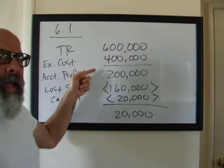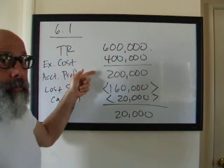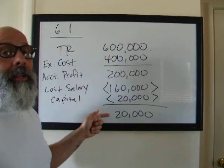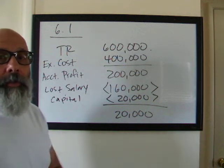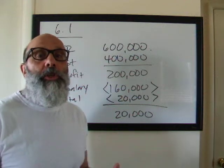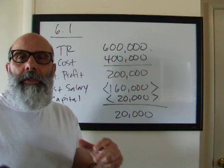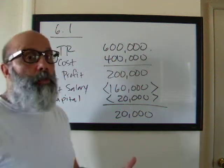So while they had $200,000 in accounting profit, according to economists, they made $20,000 in economic profit. We want to look at some relationships with revenue and cost to understand how economists look at different ranges of profit.